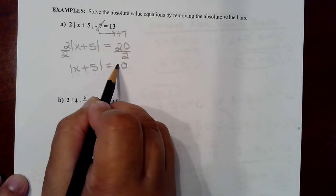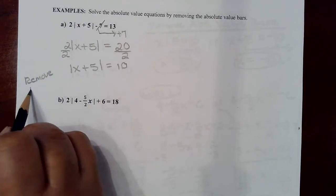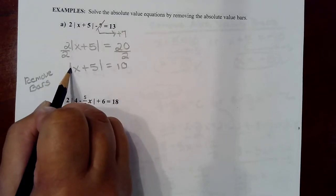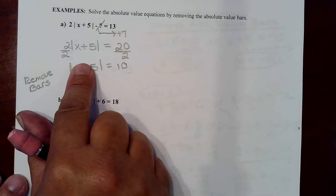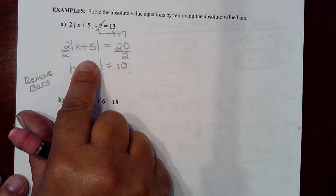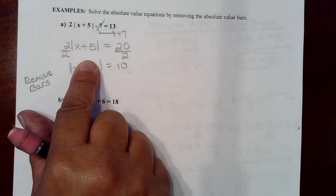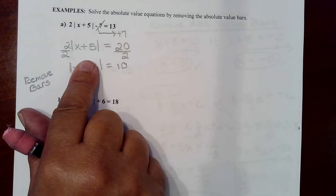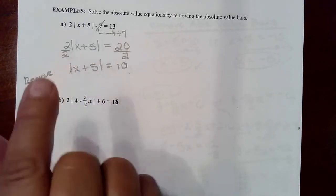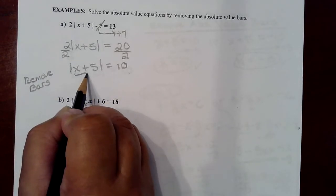With respect to removing the absolute value bars, it has to do with what those bars actually mean — they mean distance. When you see absolute value bars around any expression, the question is: what possible values inside those bars represent a distance of 10 from zero? The numbers that are 10 spaces from zero are positive 10 or negative 10. Distance is always positive — you wouldn't say you live negative 10 miles from school — and that is what absolute value bars mean.